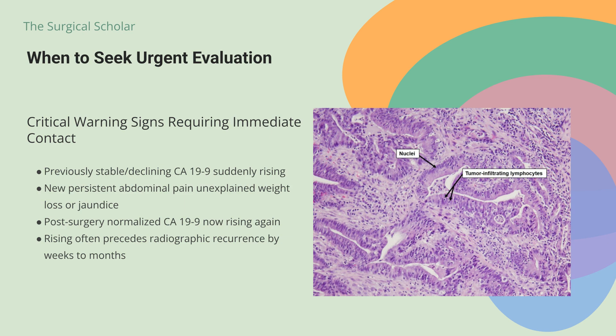Contact your oncology team immediately if: your CA-19-9 has been stable or declining but suddenly begins rising; you develop new symptoms like persistent abdominal pain, unexplained weight loss, or jaundice — even if your CA-19-9 was previously normal; or you're Lewis positive and had an elevated CA-19-9 that normalized after surgery but is now rising again. This often precedes radiographic evidence of recurrence by weeks to months.